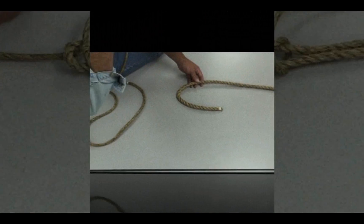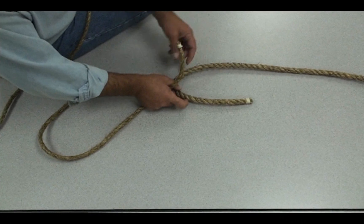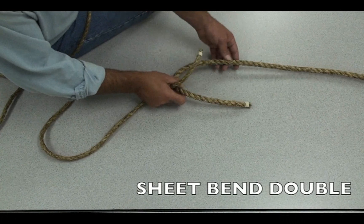And now it would be a double sheet bend. It's a little bit better than a single sheet bend. You got the 5/8 and a half. Standing end.